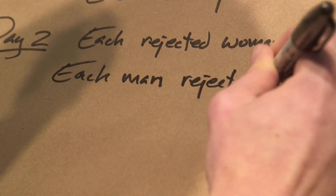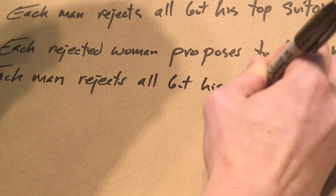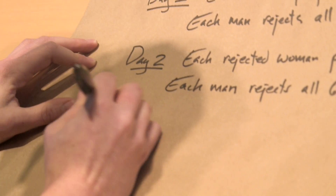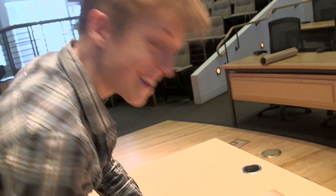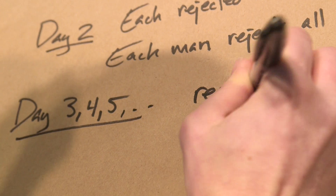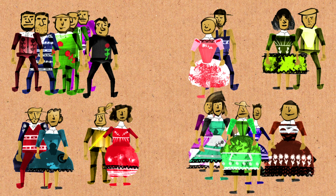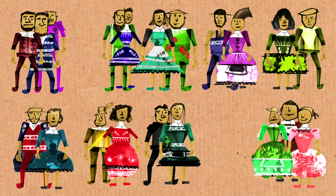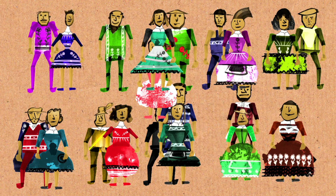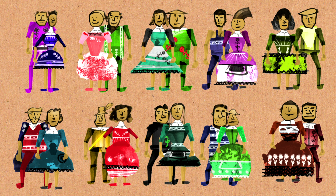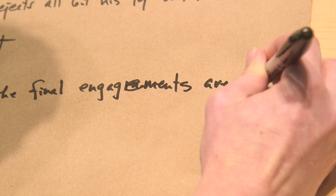On day two, each woman whose proposal was rejected the day before proposes to her next best choice, regardless of whether he's free or not. Men now have a chance to trade up — if you had a tentative engagement from the day before but have a better suitor now, you can break the previous engagement and make a new match. Each man again rejects all but his top suitor. This is why the engagements are tentative — if a woman he likes even better proposes, he's free to reject the previous engagement. We repeat this process on days three, four, five, and so on, until the algorithm stops and the final engagements are stable.